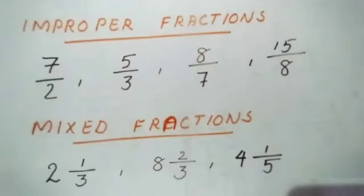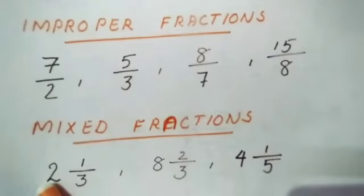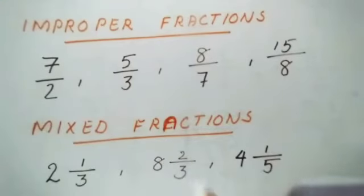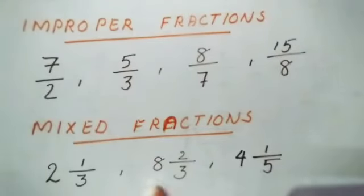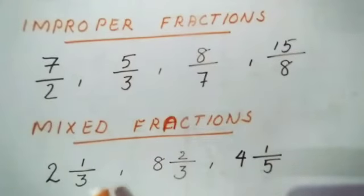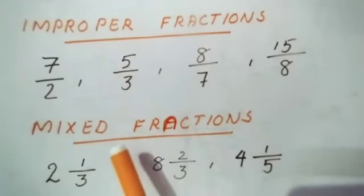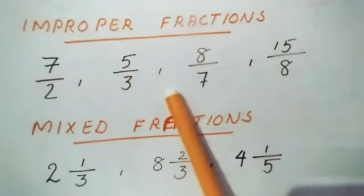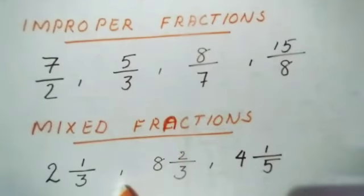Next are mixed fractions. A mixed fraction is a whole number combined with a proper fraction. Examples: 2 and 1/3, 8 and 2/3, 4 and 1/5. A mixed fraction consists of one whole part and one proper fraction. Like improper fractions, mixed fractions are always greater than 1.